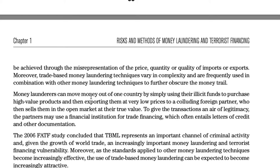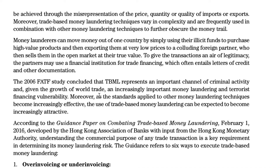Money launderers can move money out of a country by using illicit funds to purchase high-value products and exporting them at very low prices to a foreign partner who sells them at true market value. Partners may use financial institutions for trade financing, which often entails letters of credit and other documentation. The 2006 FATF study concluded that TBML represents an important channel of criminal activity, and as other money laundering techniques become more regulated, TBML is expected to become increasingly attractive.